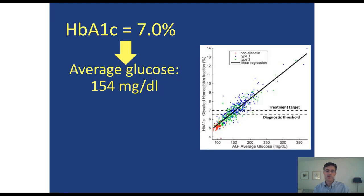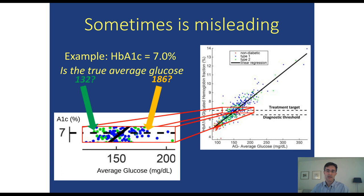Looking at data from the A1c-derived average glucose study by David Nathan and colleagues, we see a similar scatter around the regression line. The regression line allows us to tell patients with an A1c of 7% that their recent average glucose is about 154 mg/dL. But zooming in, individuals with the same A1c of 7% show quite a bit of variation — one individual had an average glucose of 132, another had 186. Both would be treated the same. This is the non-glycemic variation in A1c we want to understand.